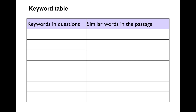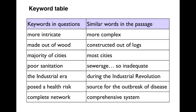That's the end of the exercise and my analysis of the answers. Hopefully you've made a keyword table from this lesson, putting your keywords from the questions and the similar words found in the passage in two columns. Here are some of the word pairs from this lesson: 'more intricate' / 'more complex'; 'made out of wood' / 'constructed out of logs'; 'majority of cities' / 'most cities'; 'poor sanitation' / 'sewerage so inadequate'; 'the industrial era' / 'during the industrial revolution'; 'posed a health risk' / 'source for the outbreak of disease'; 'complete network' / 'comprehensive system.' That's the end of today's lesson. In the next lesson, we'll look at paragraph headings questions.